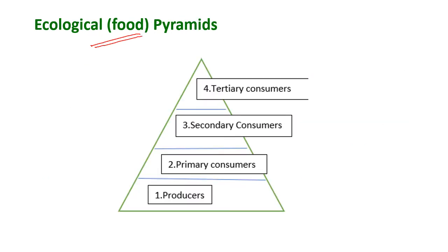Ecological pyramids are food pyramids. In this pyramid, producers occupy the base level or first level, primary consumers occupy the second level, secondary consumers occupy the third level, and tertiary consumers occupy the fourth level.